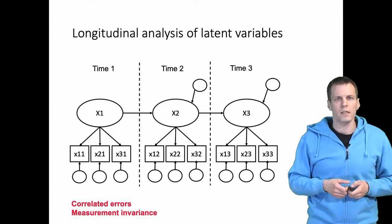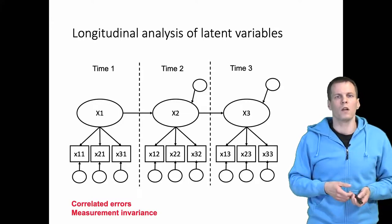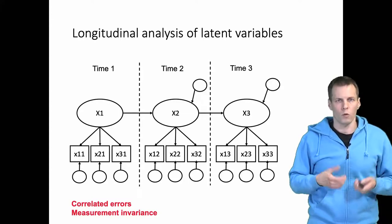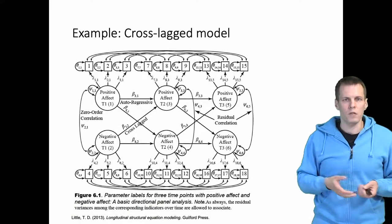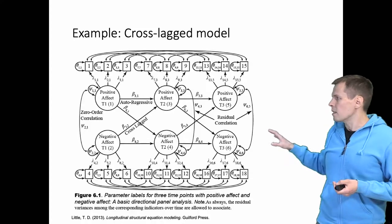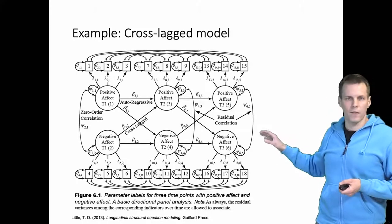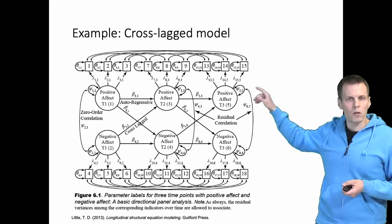Let's take a look at two examples of what a longitudinal latent variable model would look like. So this is a cross-lagged model without random intercepts. We can see that we have positive effect, negative effect, and the correlation between the error terms in the same time.